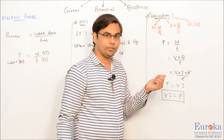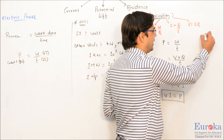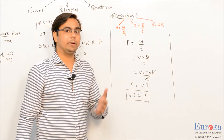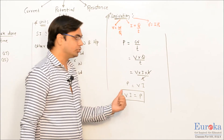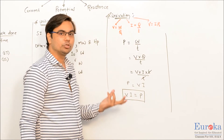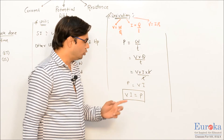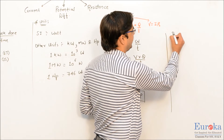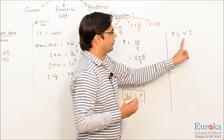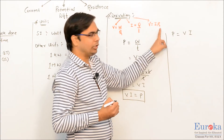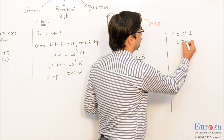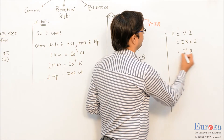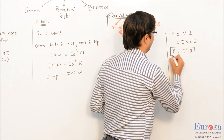There are other formulas as well using Ohm's law. If you need to find power but don't have the value of V, we can modify the formula: P equals V times I, but instead of V we write I times R, so it becomes I times R multiplied by I. Therefore, P equals I squared times R is another formula for power.